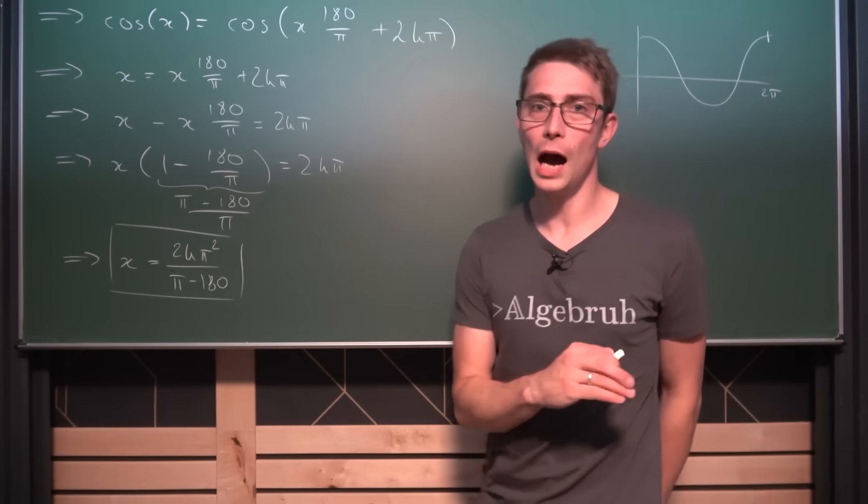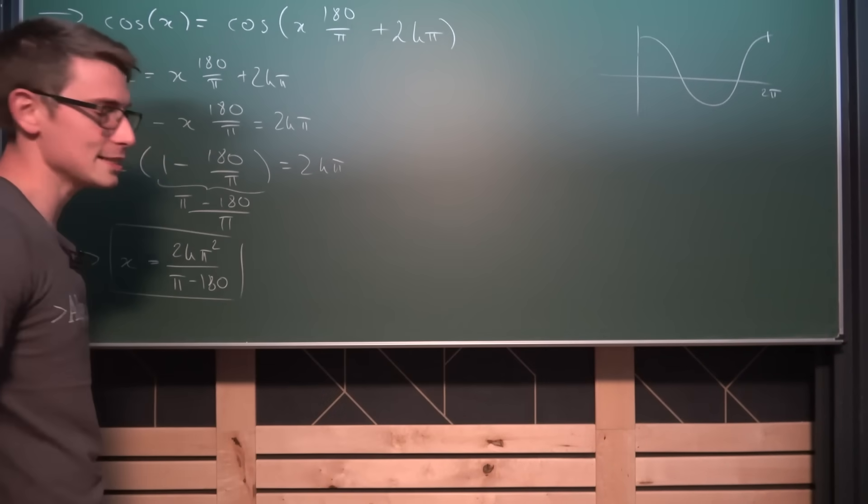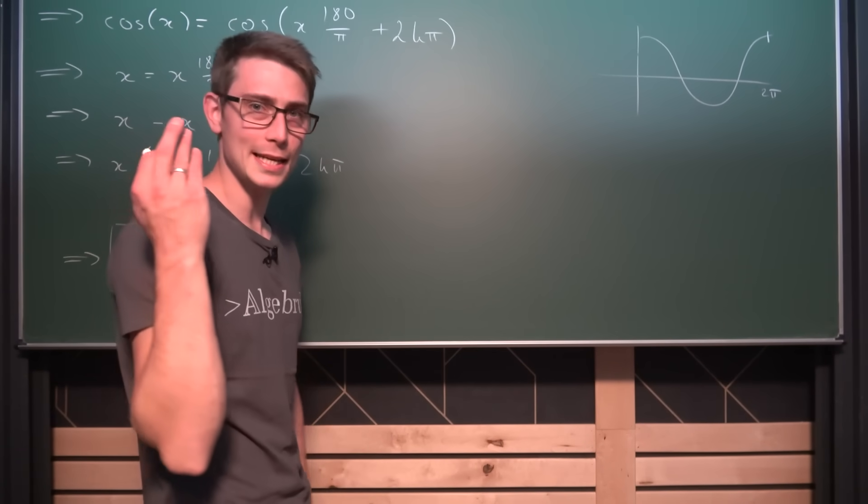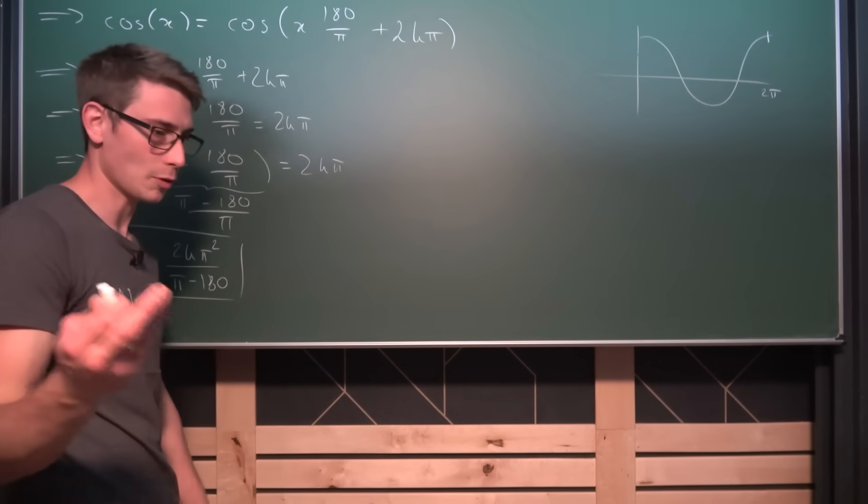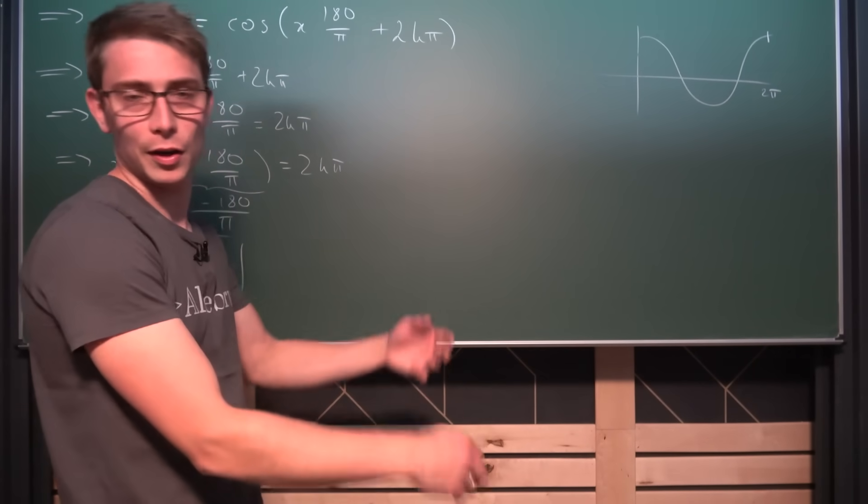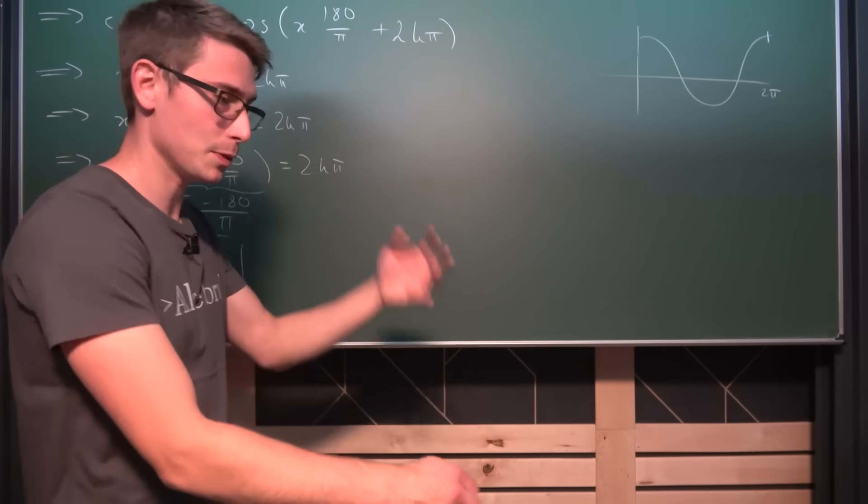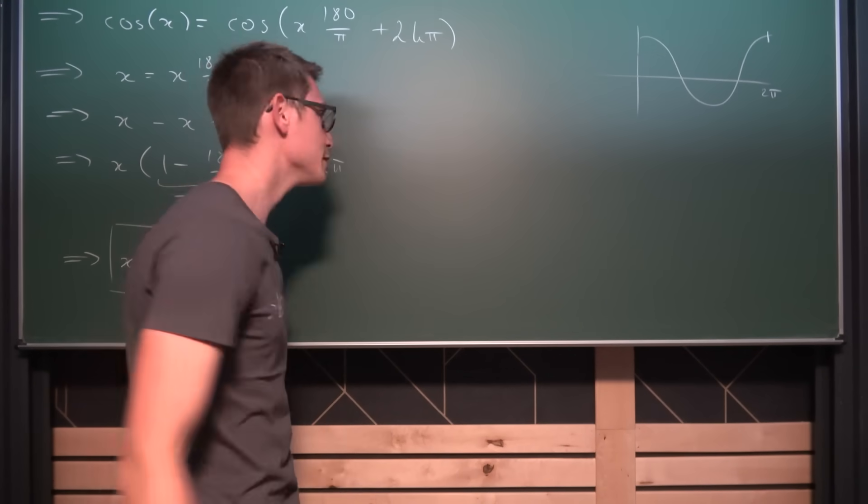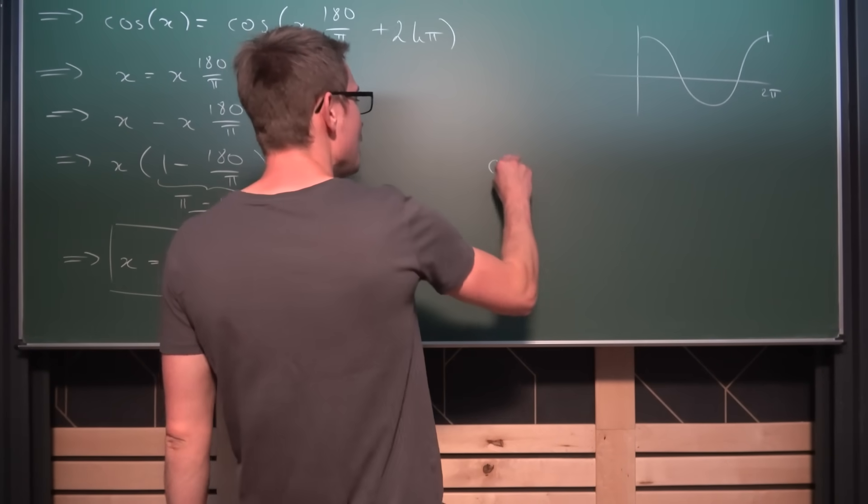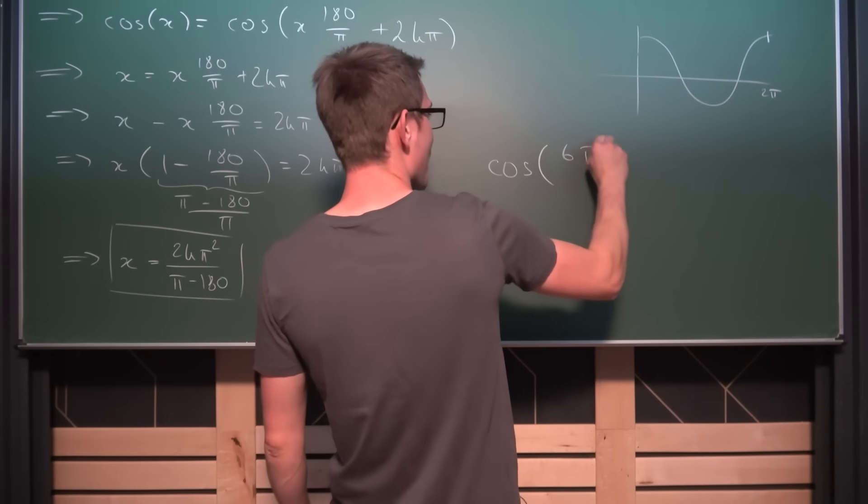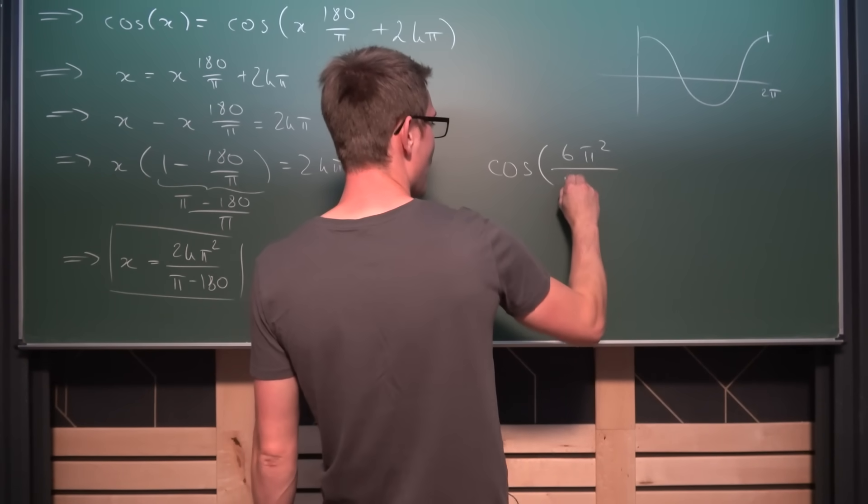So for example, I could now go to my students and say, and this makes everything very easy and they won't be confused as hell by this expression. So instead of saying, use cosine of 2π for example, because they have no idea if 2π is radians or degrees, I'm just gonna say from now on, make use of the cosine of 6π squared divided by π minus 180.